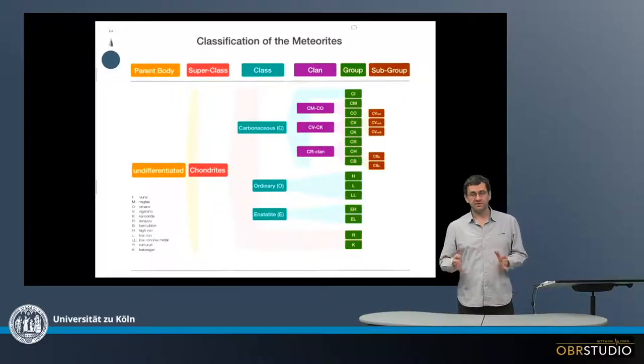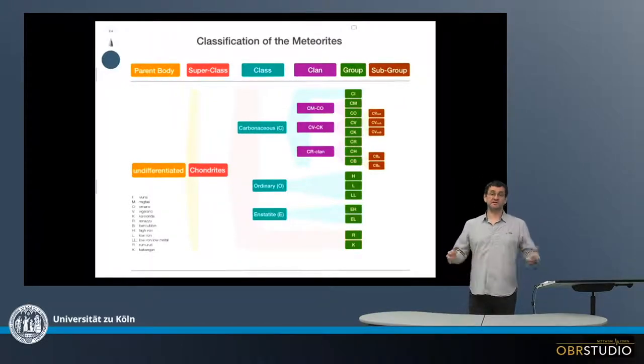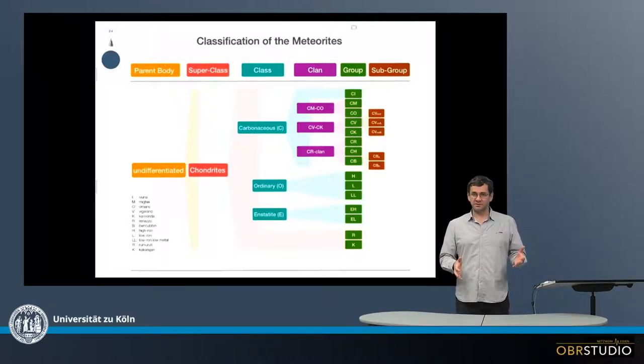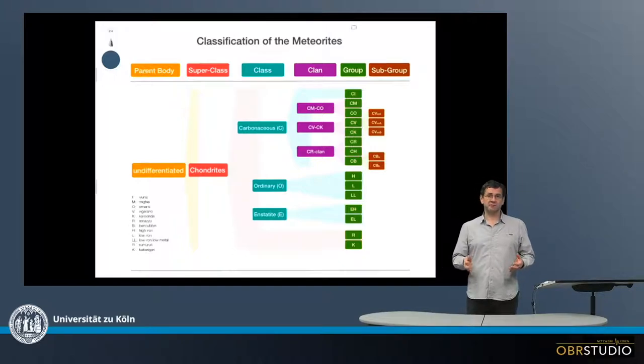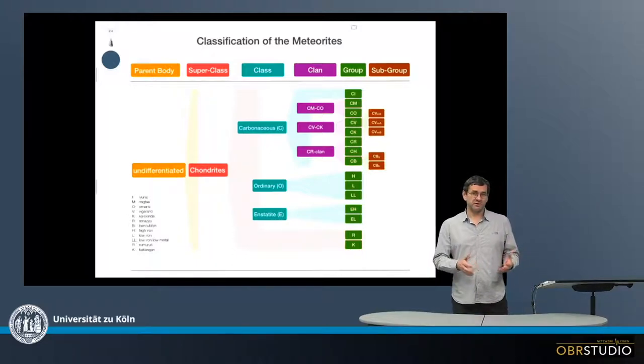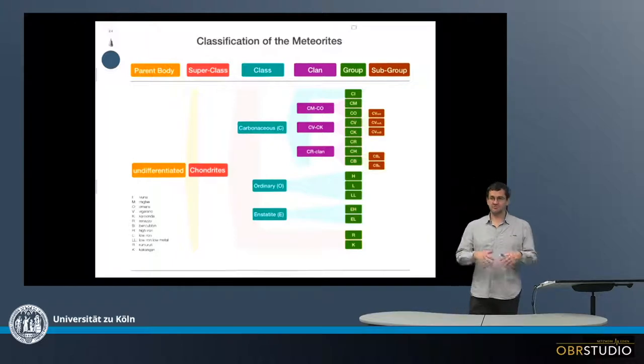Classically or traditionally, meteorites are divided into a large set of groups. The basis for this classification is their bulk element composition, their isotope composition, but also their petrography, which means what components and what abundances do these components occur in the different groups of meteorites, components such as CAIs, chondrules, matrix, opaque phases, and so on, or maybe there aren't these kind of components.